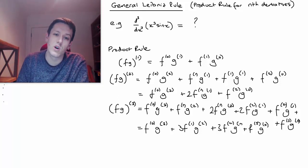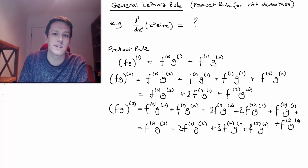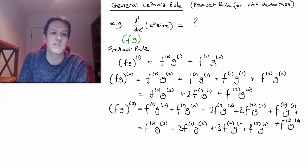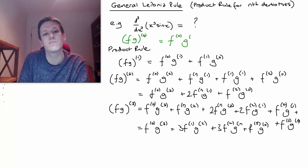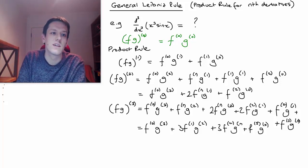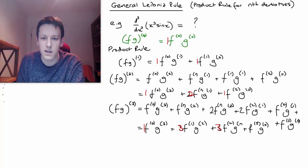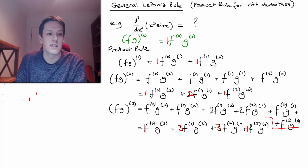If I add a trivial case at the top — f·g⁰ is just f0 times g0 — and emphasize the constants, I get: 1, 1 | 1, 2, 1 | 1, 3, 3, 1. Pascal's triangle looks exactly like this: 1; 1, 1; 1, 2, 1; 1, 3, 3, 1. And it's no coincidence.